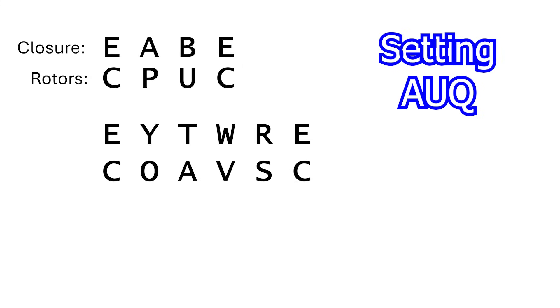OK, so C maps to E, P maps to A, U maps to B, and C maps to E. So far, so good. Let's try our second loop.